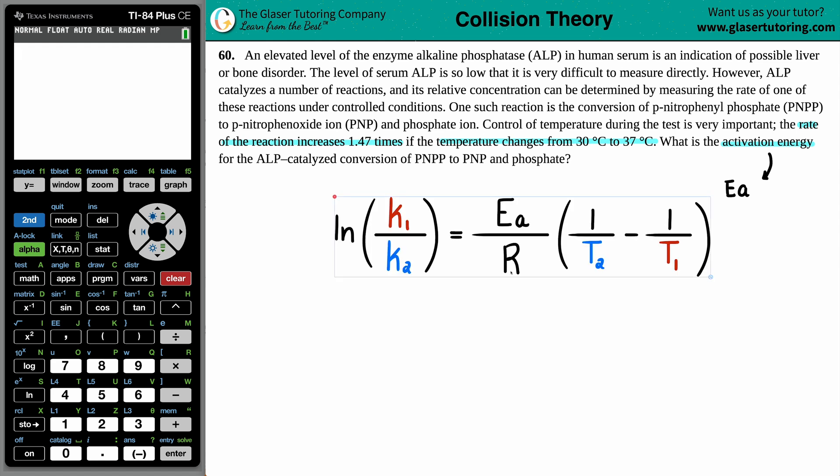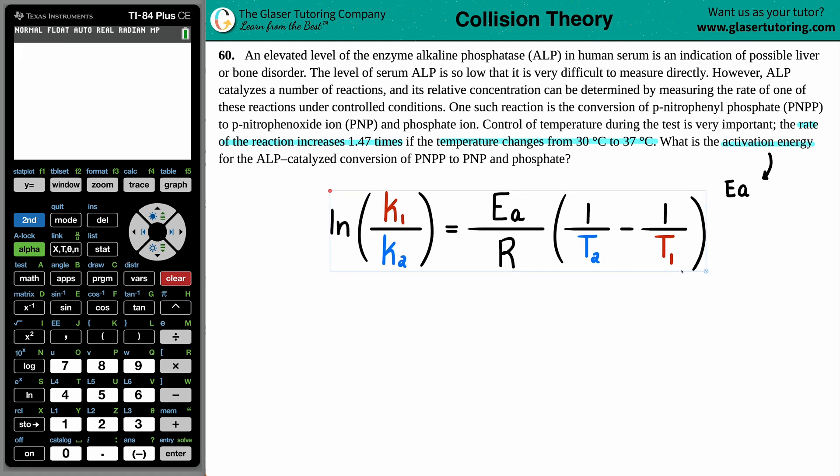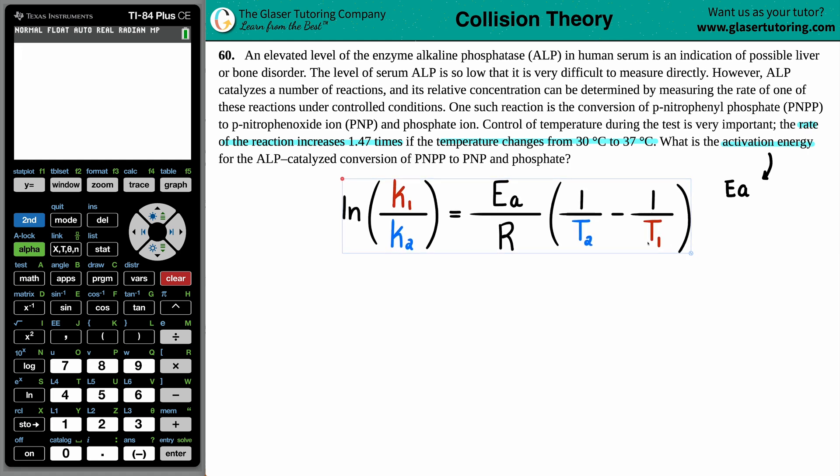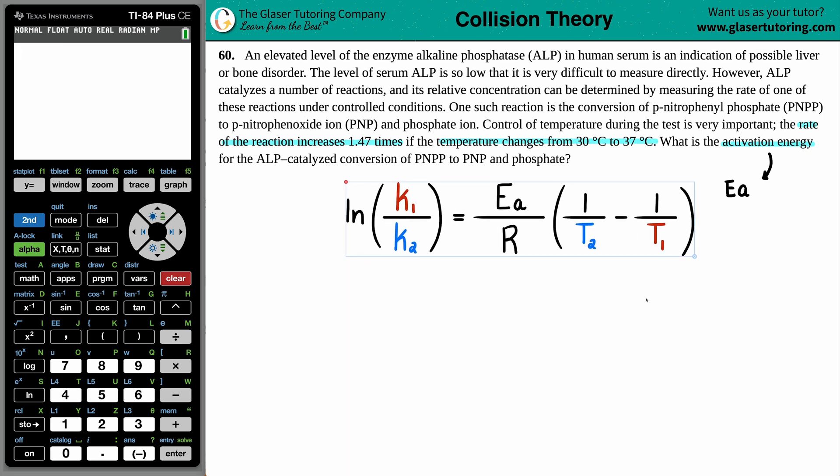And that formula is this one right here. It's the ln K1 over K2 equals Ea over R times 1 over T2 minus 1 over T1. Now this is basically just a fancy linear equation of Y equals MX plus B, but just plugging in for your two points, K1 and K2, T1 and T2.